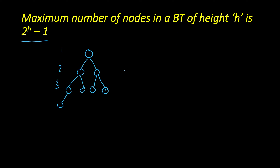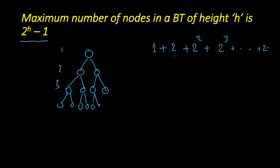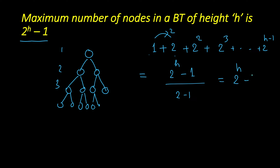Given that the height of the tree is H, all H levels are completely filled. If height is 1, we have 1 node. If height is 2, we have 1 plus 2 nodes. If height is 3, we have 1 plus 2 plus 4 nodes. If height is 4, we have 1 plus 2 plus 2² plus 2³ nodes, and similarly up to 2 raised to the power H minus 1. This is a geometric progression with H terms and ratio 2, giving 2 raised to the power H minus 1, divided by ratio minus 1 (which is 1), so the result is 2 raised to the power H minus 1.